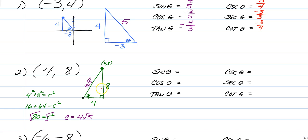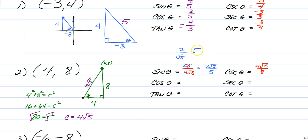Sine is opposite over the hypotenuse, so we have 8 over 4 root 5, which means our reciprocal would be 4 root 5 over 8. You must simplify your answers. So 8 over 4 root 5 — the 8 over 4 gives us 2 over root 5. We can't have a radical in the denominator, so we must simplify that to 2 root 5 over 5. You have 2 over root 5, multiply top and bottom by root 5, giving 2 root 5 over the square root of 25, which is 5. So we have 2 root 5 over 5.